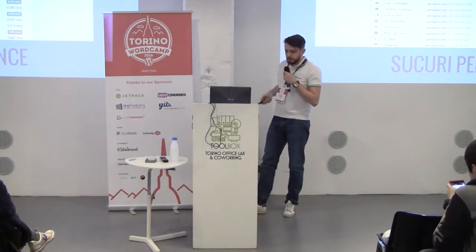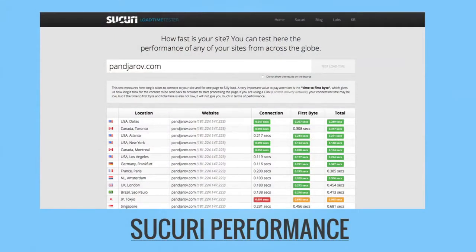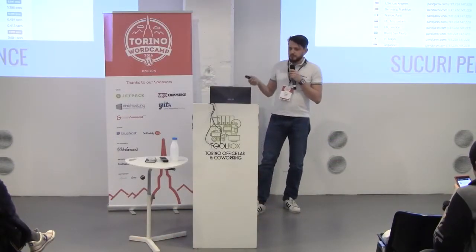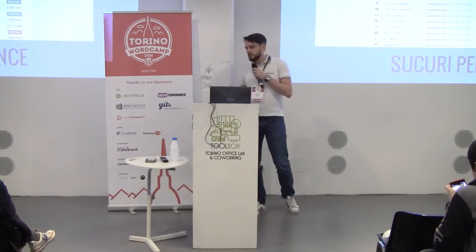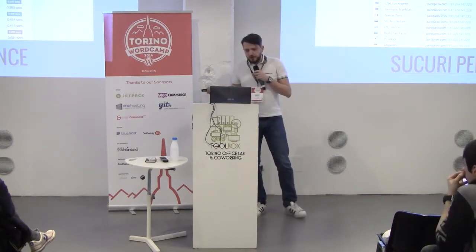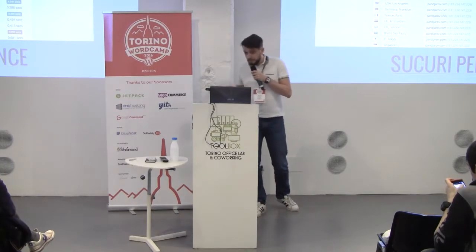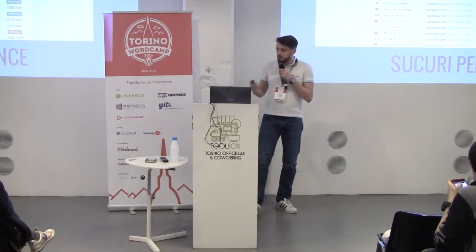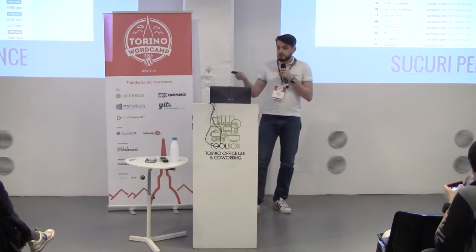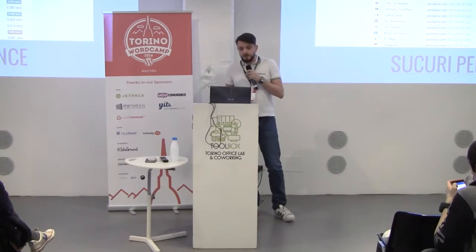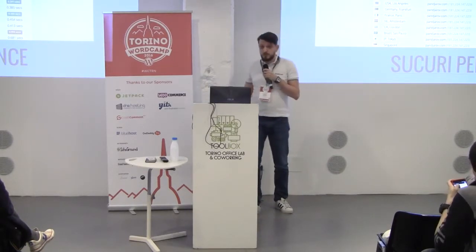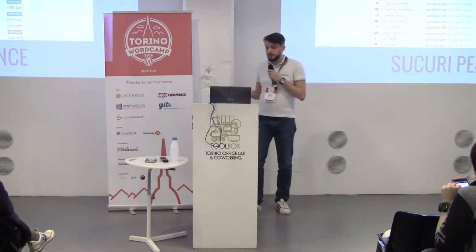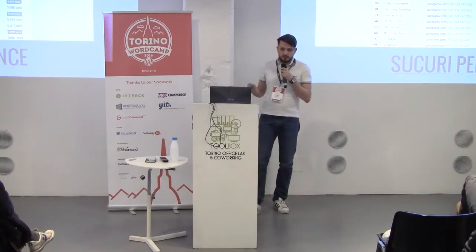A new tool I find particularly useful is Sucuri Performance, which Sucuri recently launched. It basically uses its own CDN network to make checks of how fast your website loads from a lot of different locations. For example, with my site hosted on a server in Amsterdam, you can see it works perfectly well in the United States and in Europe, but there is a problem in Tokyo. If you see that you have an issue loading the website in a region where you have customers or readers, maybe you should do something about it — figure out which CDN you should use, or switch to a different one. It's a really good tool to see how your website loads across the world.